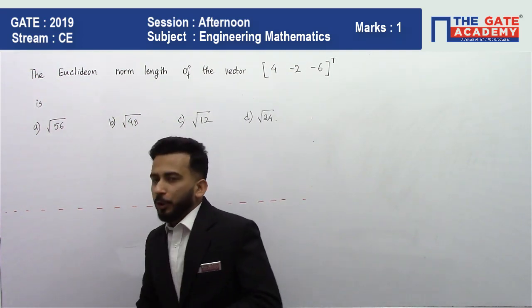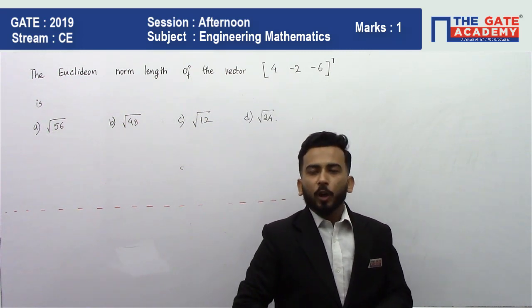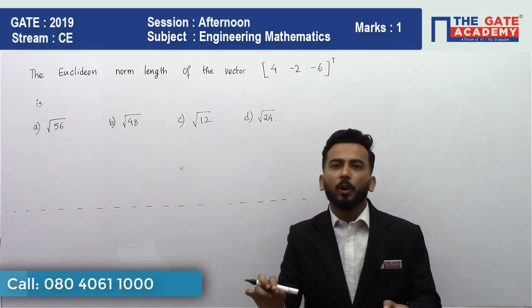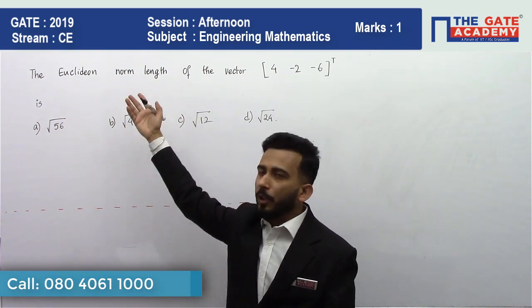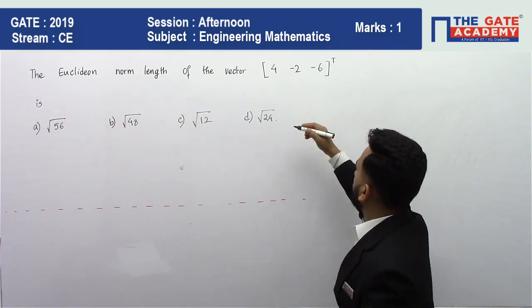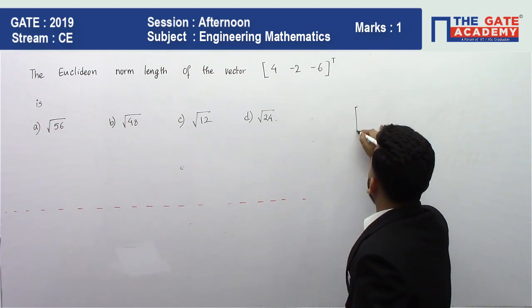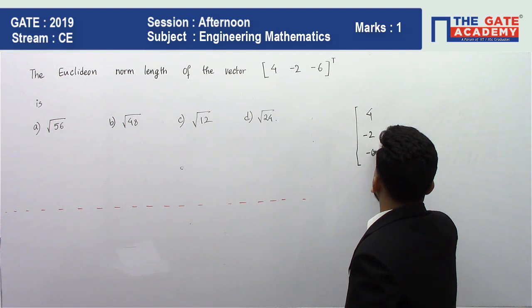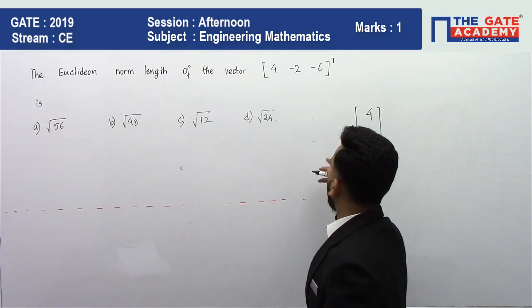So Euclidean norm length is nothing but the length of the vector. Finding the length or the magnitude of the vector is also called Euclidean norm length. So the vector is, if you take the transpose, you will be getting [4, -2, -6] and you need to find the norm length of this vector.